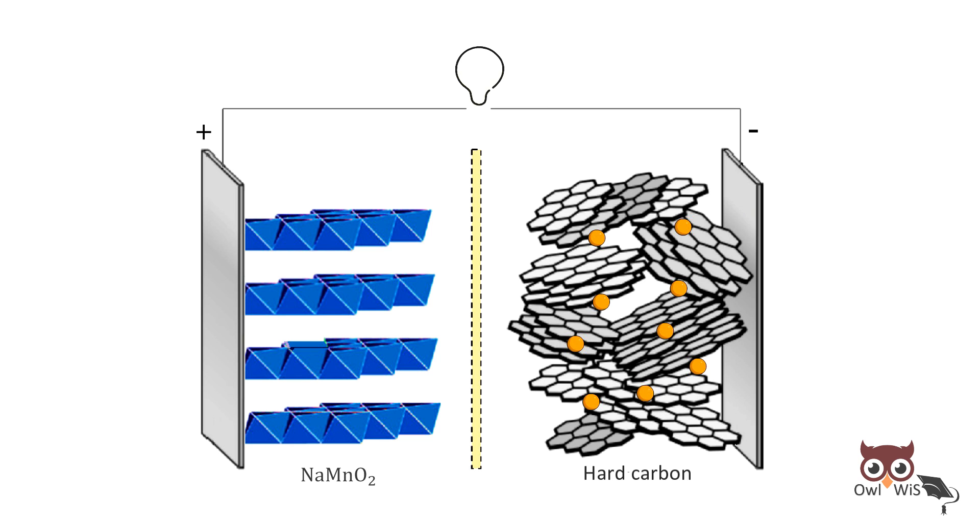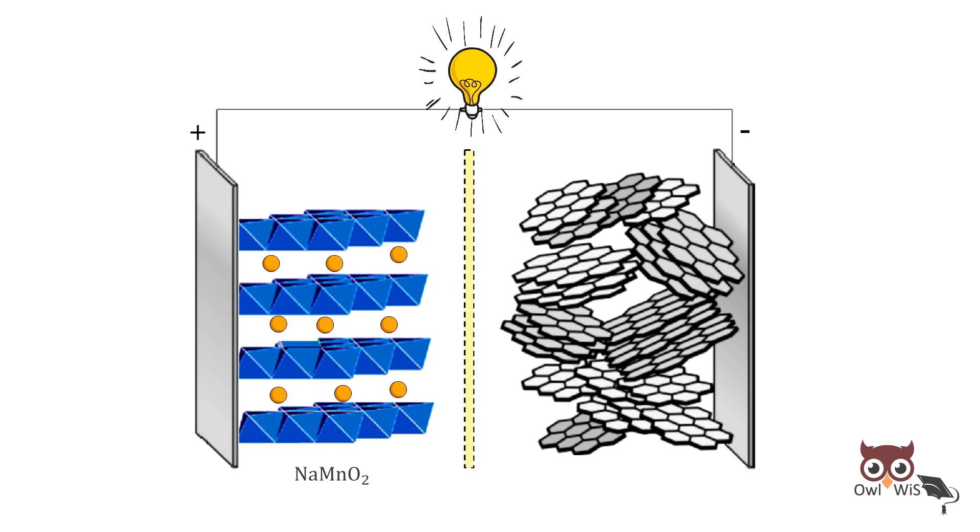During discharging, the reverse process occurs where the sodium ions are extracted from the hard carbon and re-intercalate in the sodium-based structure with the electrons traveling through the external circuit doing useful work. The reactions are as follows at the positive electrode, the negative electrode, and the overall reaction.